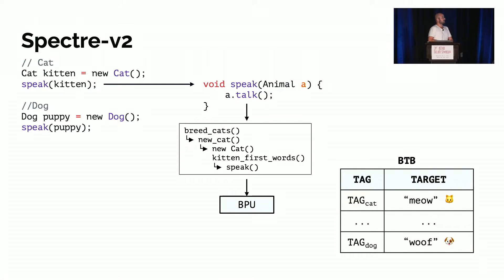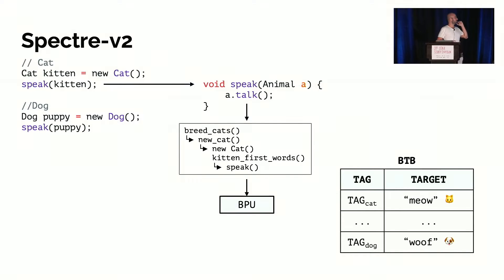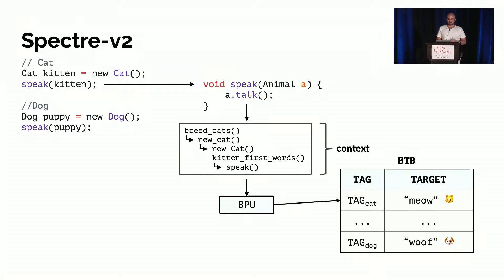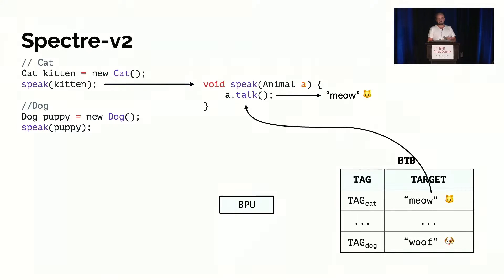By context we simply mean the history of previously executed functions, jumps, branch conditions, and so on. For instance, if you're coming from the cat class, you can expect the function to be called from a context like 'breed cats', 'new cat', and so on. This context is used to compute the target in the BTB, so from a specific context it becomes very clear which target to speculate on. The BPU is thus able to speculate on the correct target, making execution much faster.